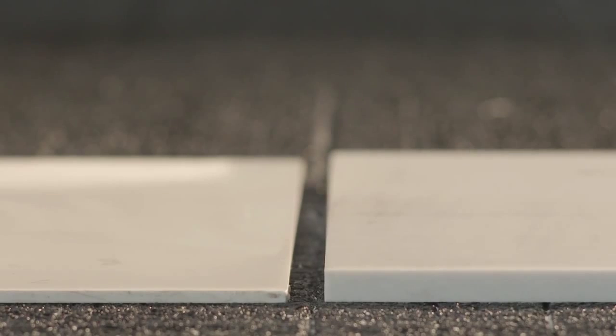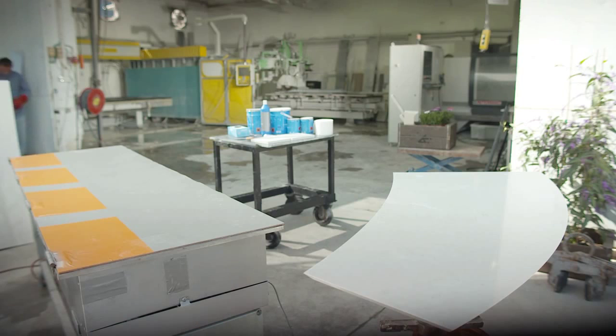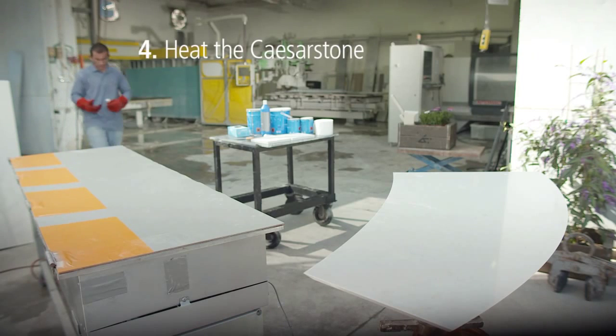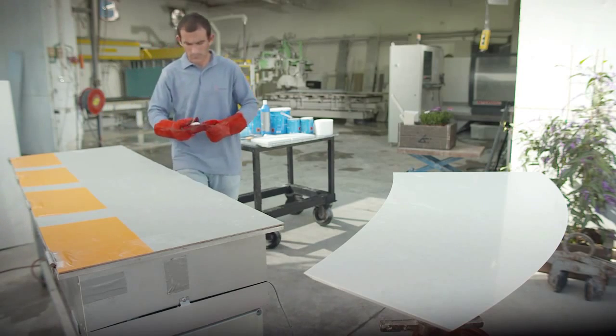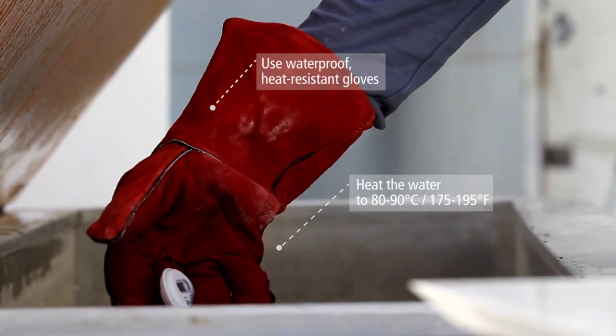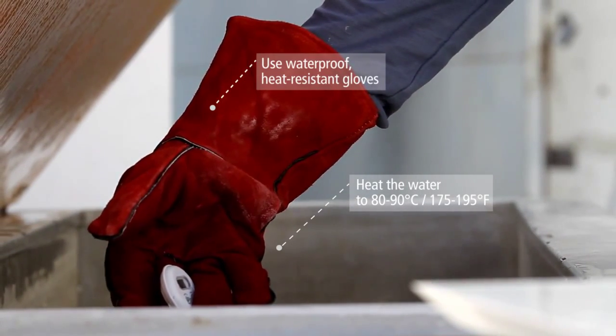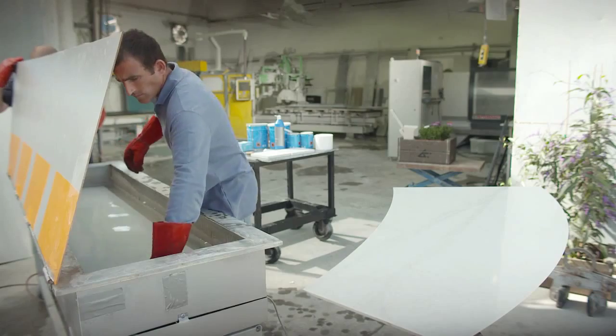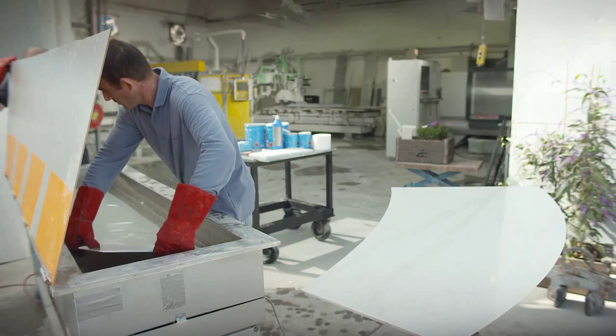Once you've reduced the Caesarstone to the thickness you need, move on to the next step, heating the material. Caesarstone quartz surfaces become flexible when they're heated. Continue with the heating process until the Caesarstone becomes flexible.